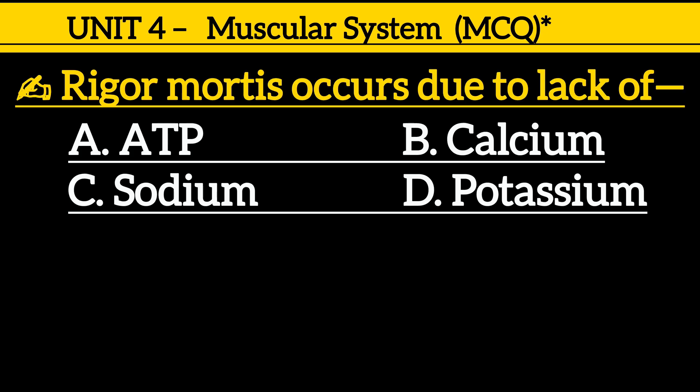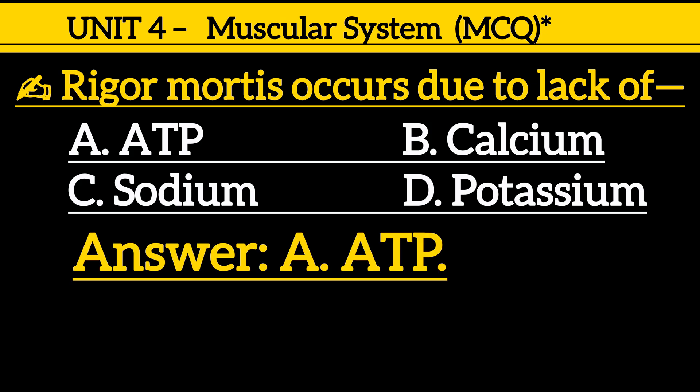Next one is: rigor mortis occurs due to lack of — option A: ATP, option B: calcium, option C: sodium, option D: potassium. Correct answer is option A, ATP.